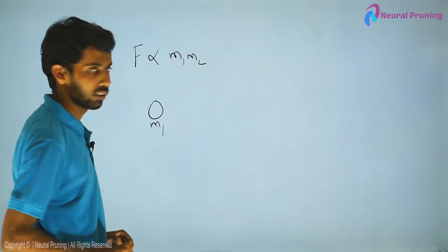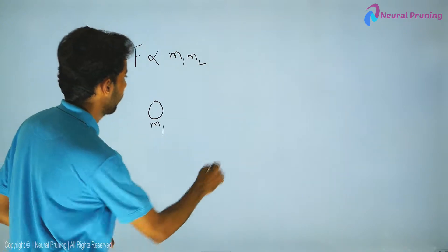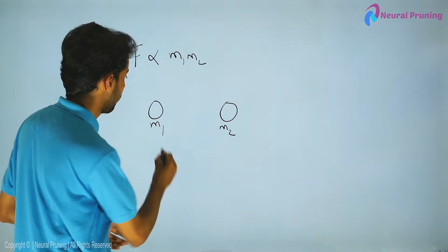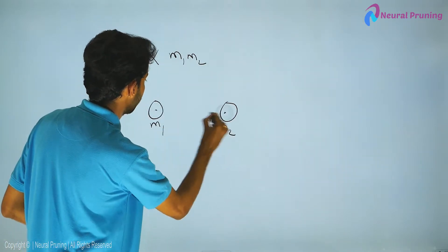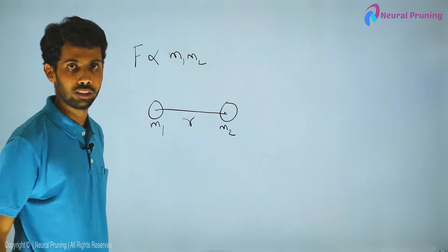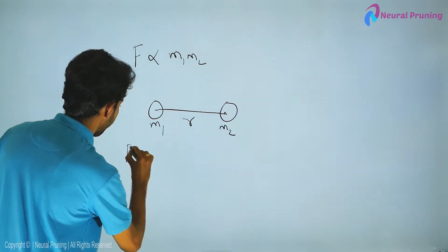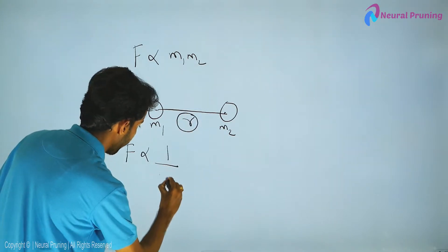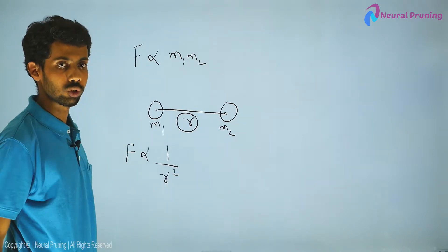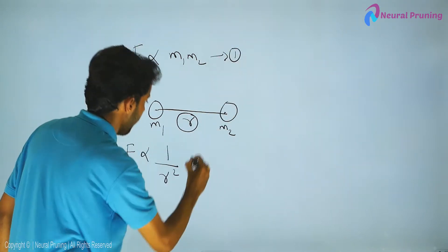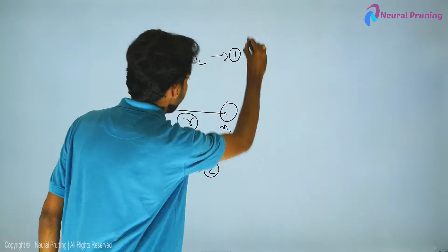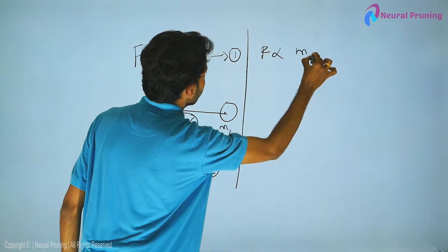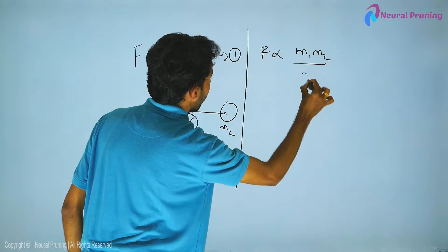Let's assume this is a body of mass m₁ and this is a body of mass m₂ — they need not be the same mass. The distance between them is r. Combining the two proportionalities, we get F is proportional to m₁ × m₂ divided by r².